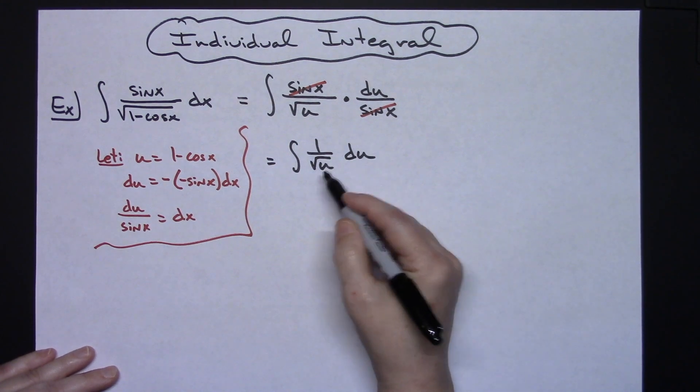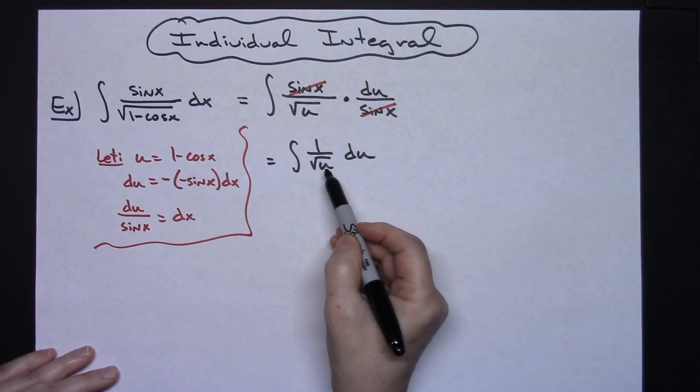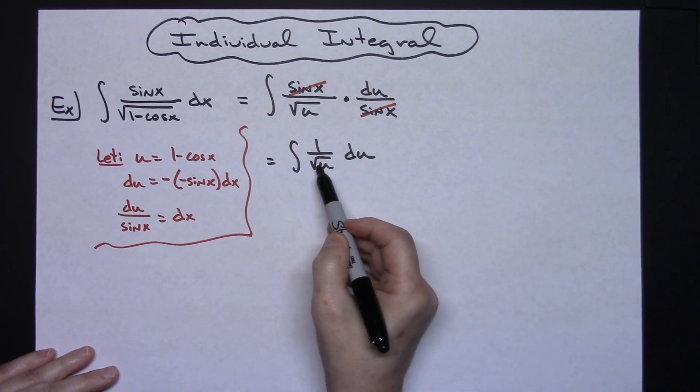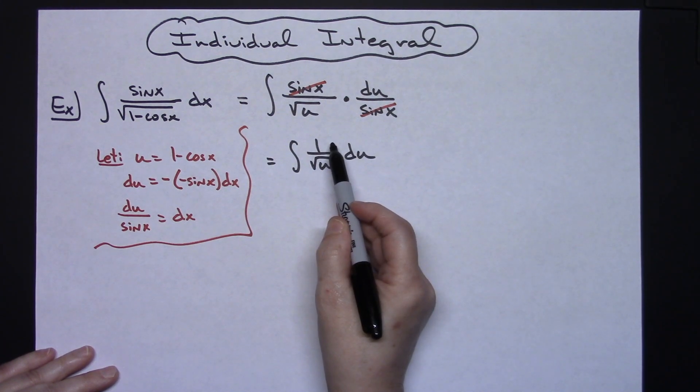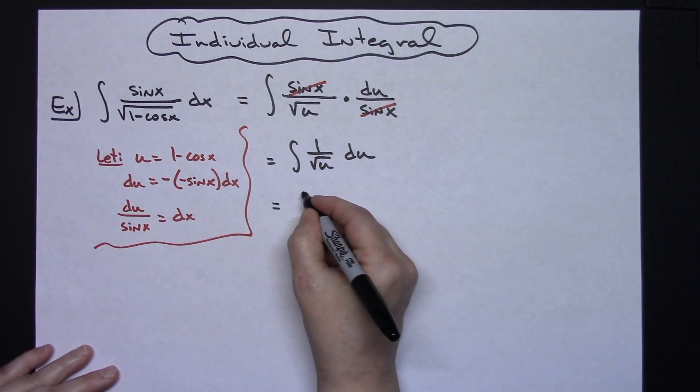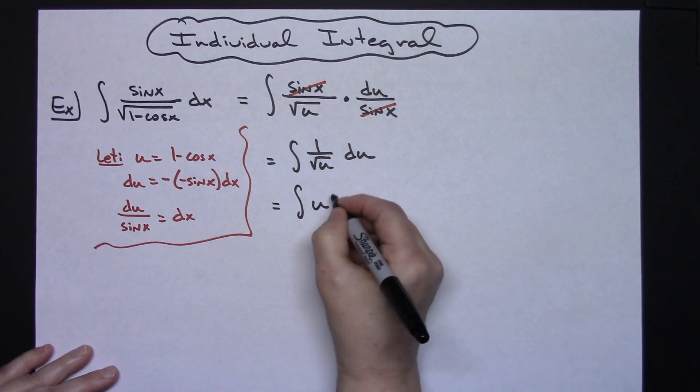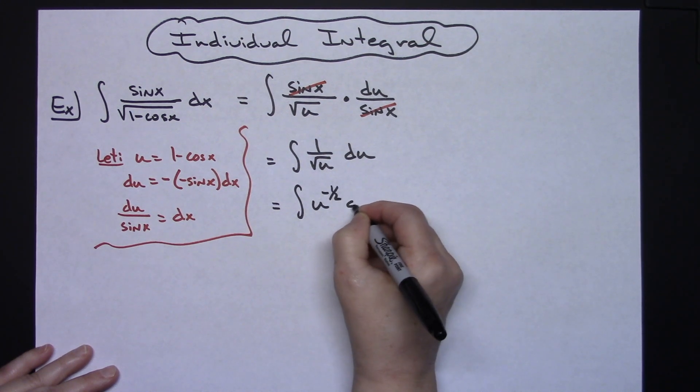I'm now in terms of all u so then I can start to integrate this. I can rewrite this as u to the one half and move it up to the top which will make it negative. So I'm going to rewrite it as the integral of u to the negative one half du.